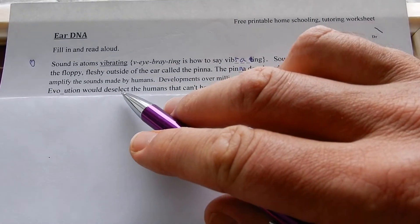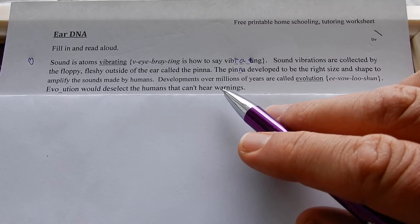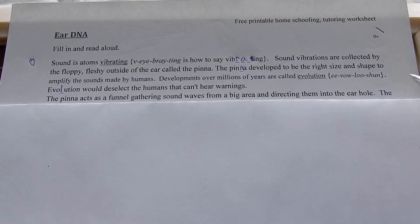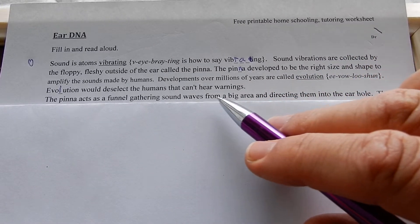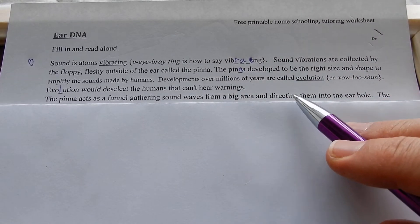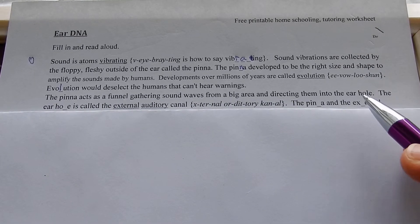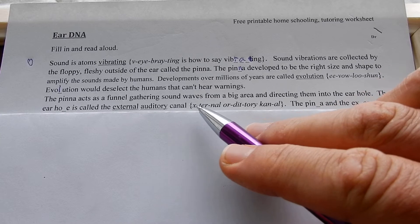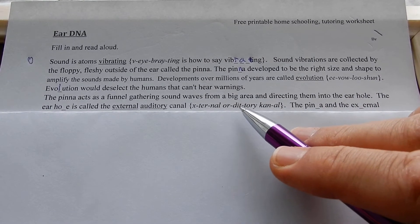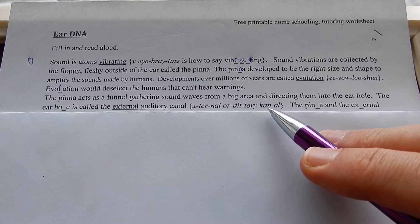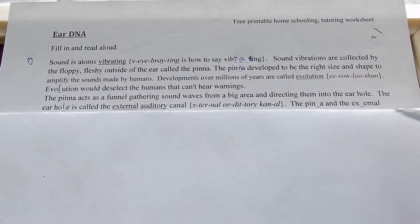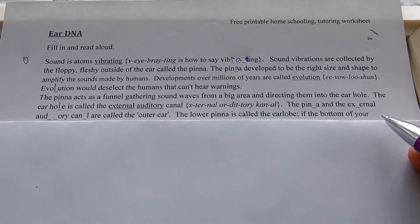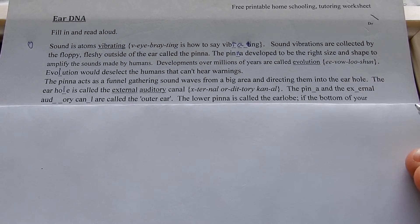Evolution would deselect the humans that can't hear warnings. The pinna acts as a funnel, gathering sound waves from a big area and directing them into the ear hole. The ear hole is called the external auditory canal. The pinna and external auditory canal are called the outer ear — yes, the bits you can see.